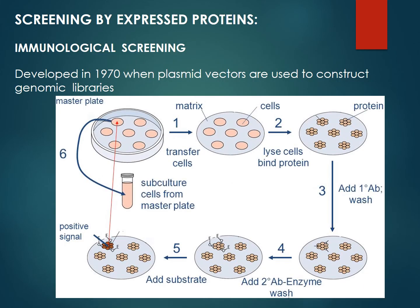This is the type of screening by using expressed protein. We will insert the protein in the DNA. This protein will not be produced if it is not transformed. This is expressed protein screening. The first method is Immunological Screening, which is the selection of recombinants.